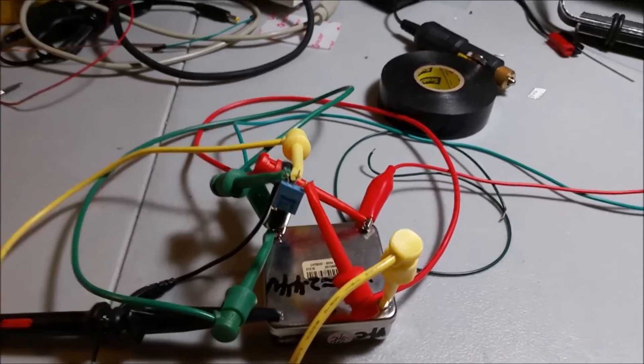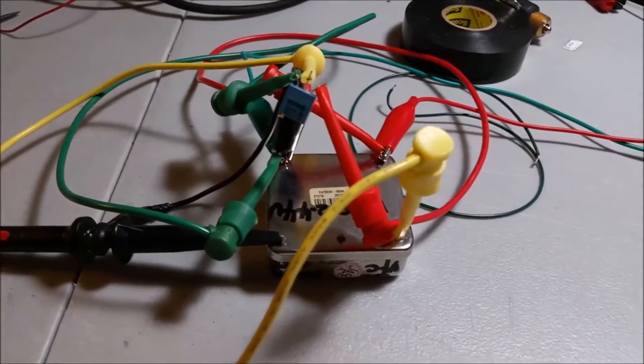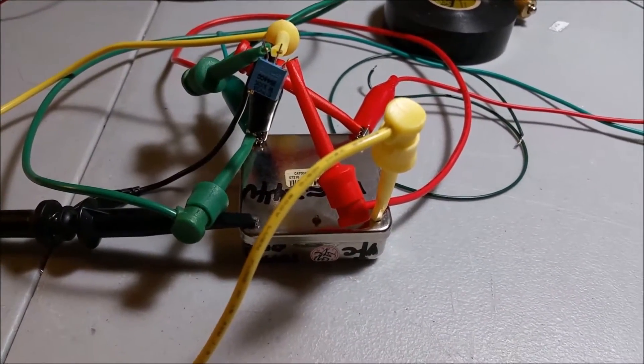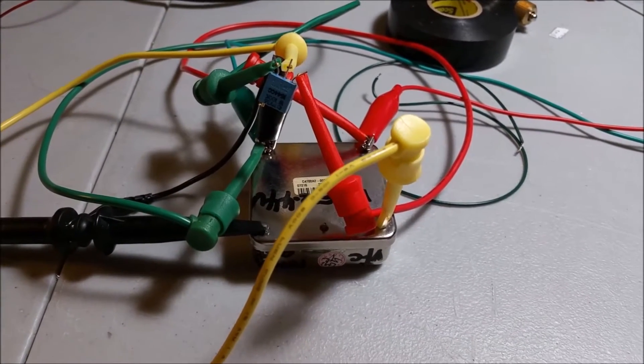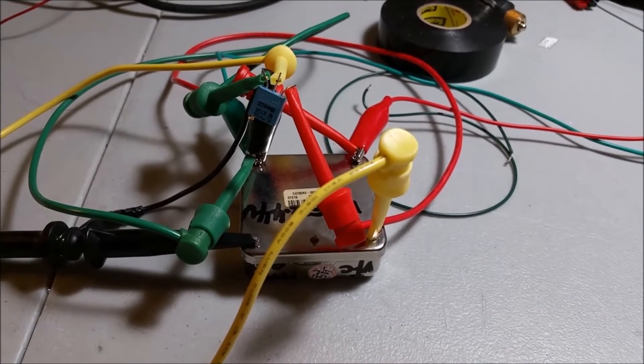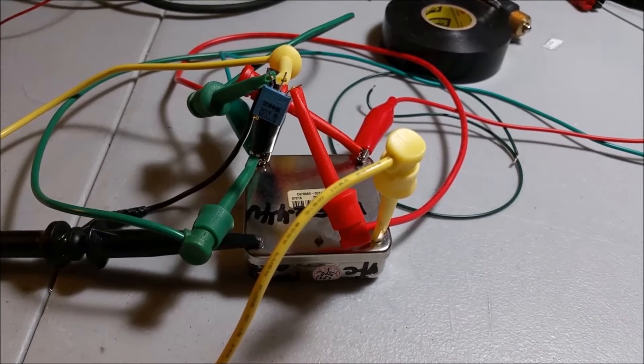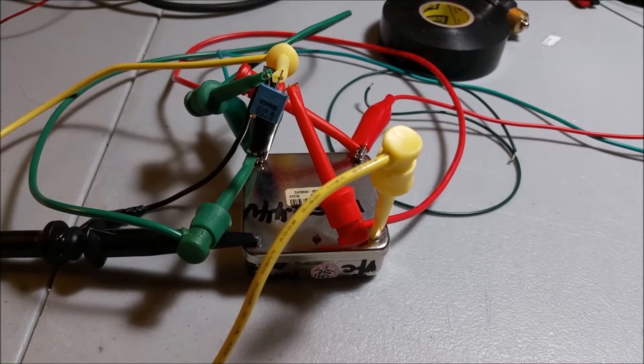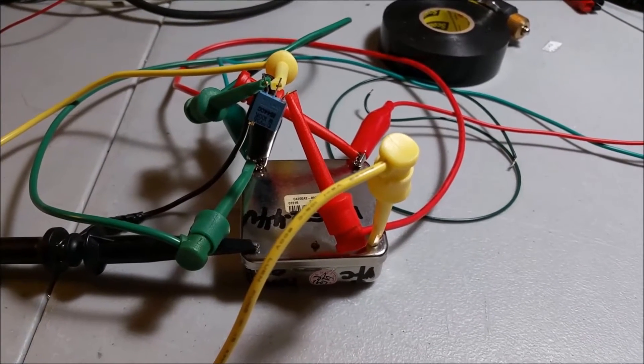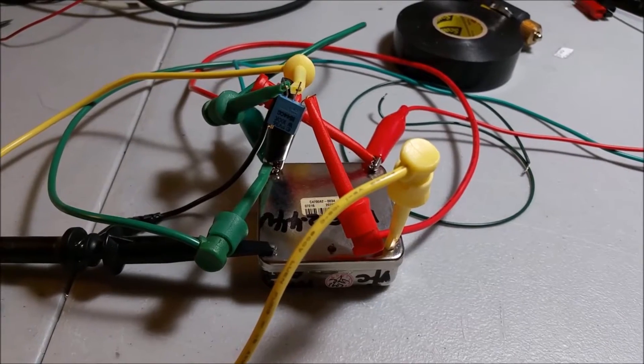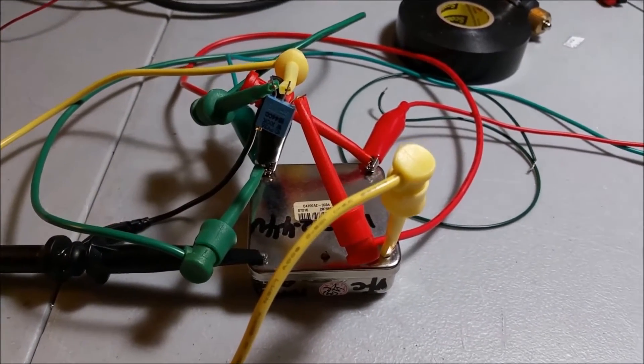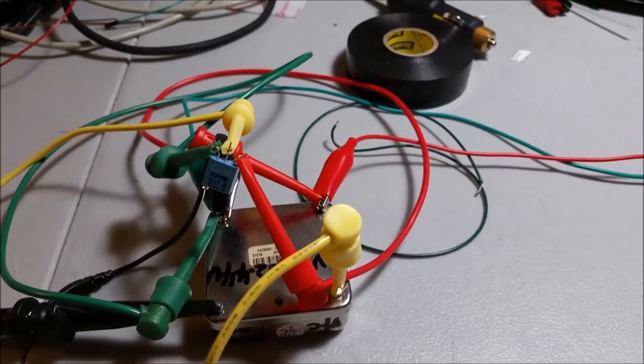So I picked this up off of eBay for $20, inexpensive unit. And it was attractive because it's a Trimble, true Trimble unit. It's used, but it runs off of 12V DC and it has a nice sine wave output of about 3V peak to peak if I remember correctly.